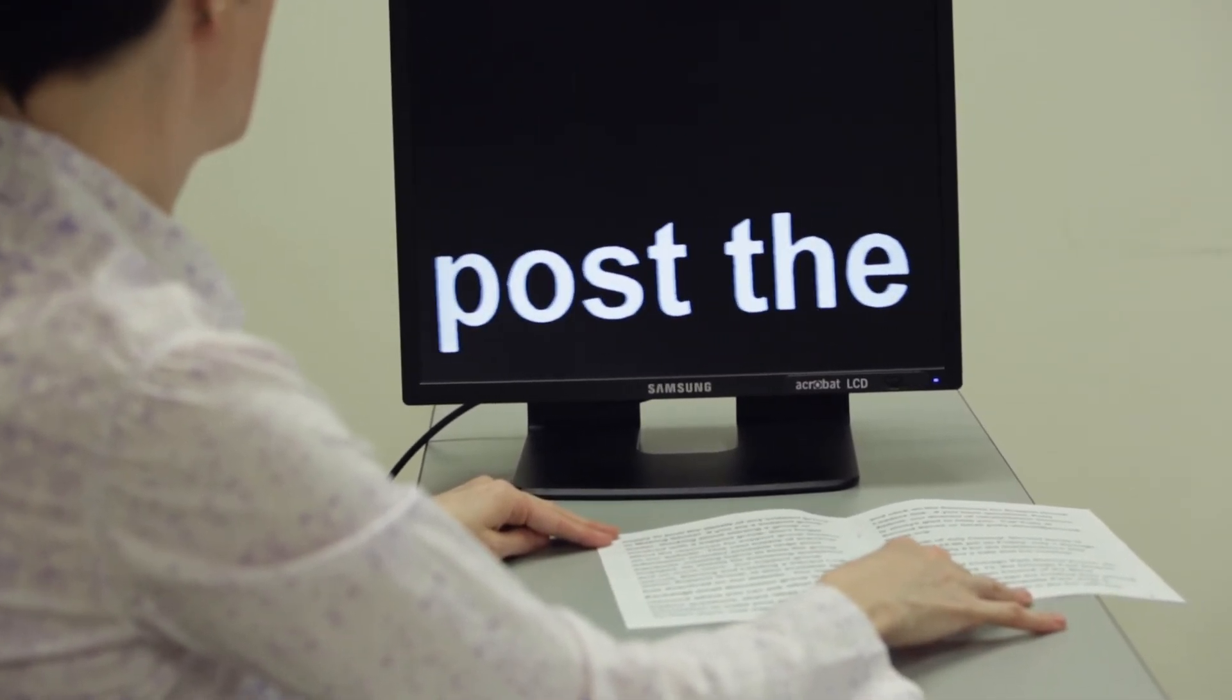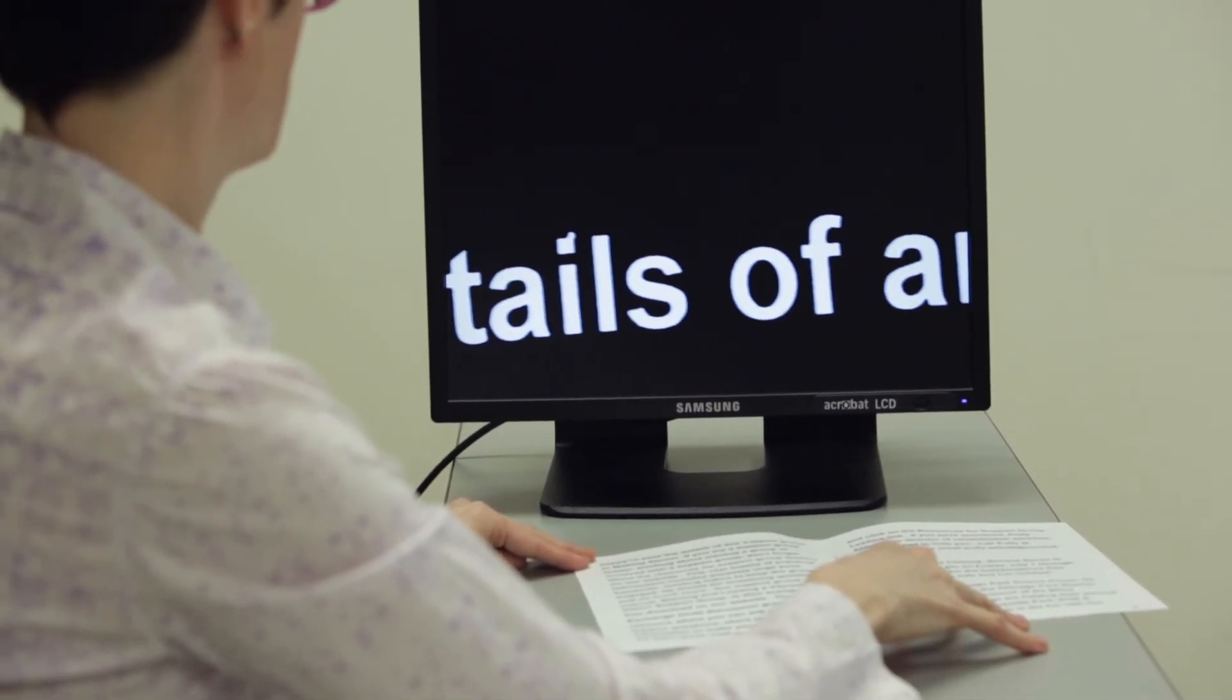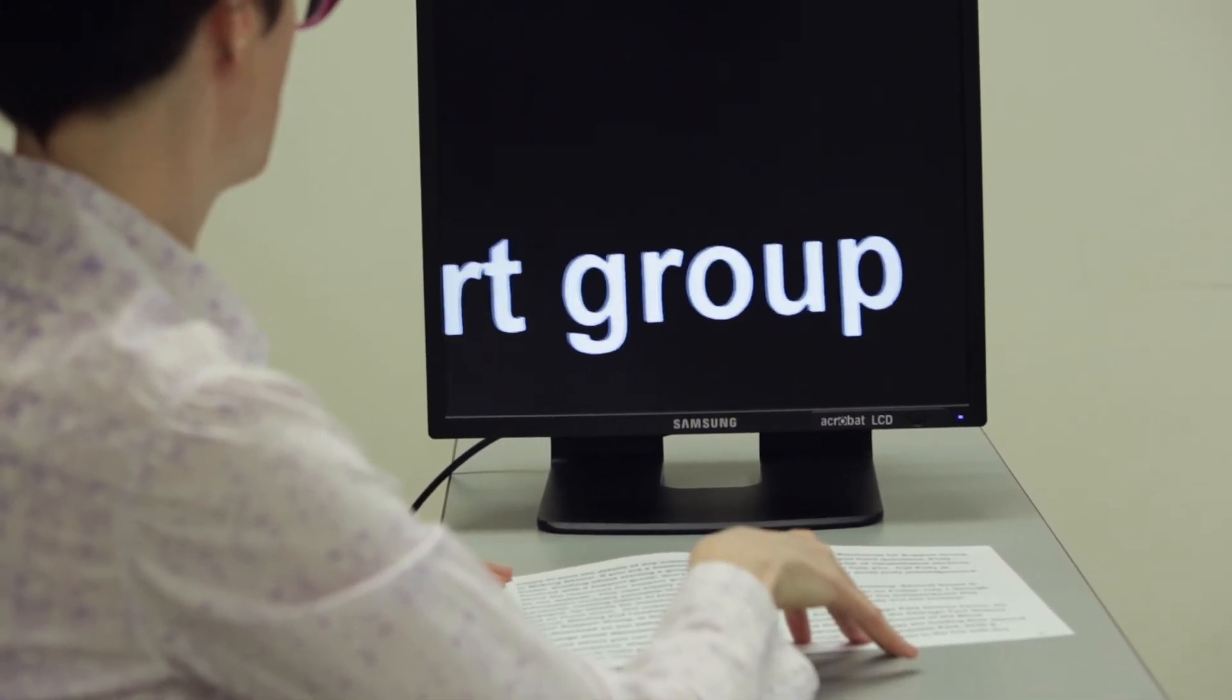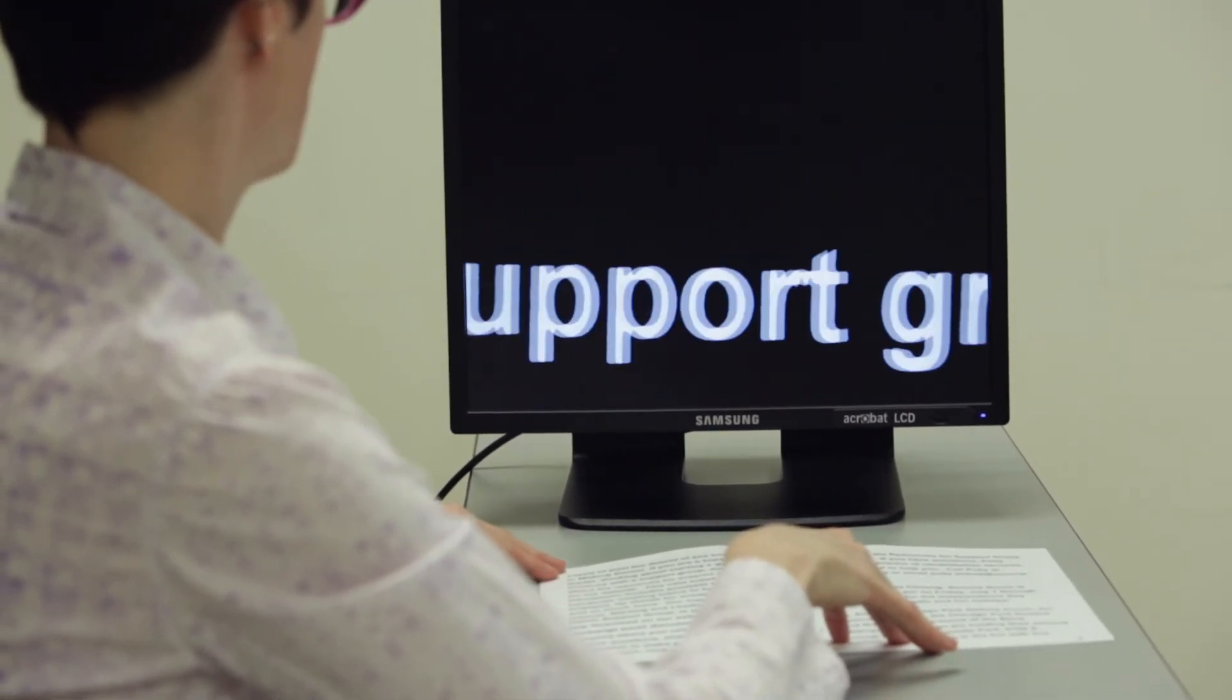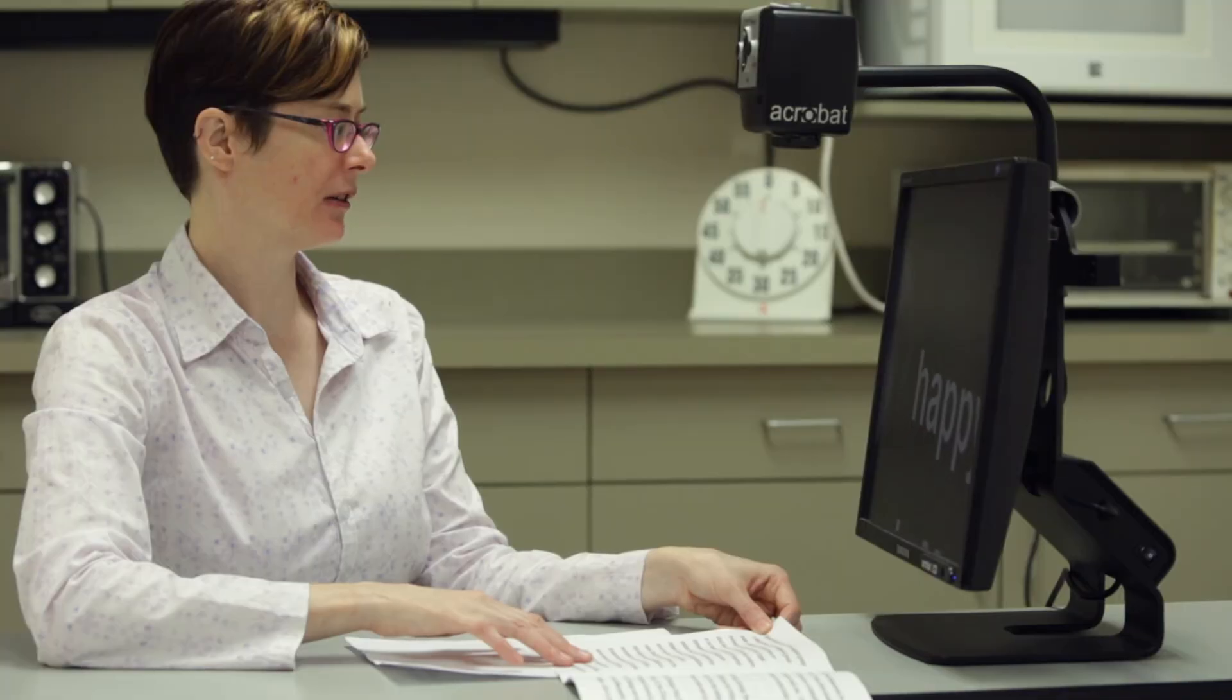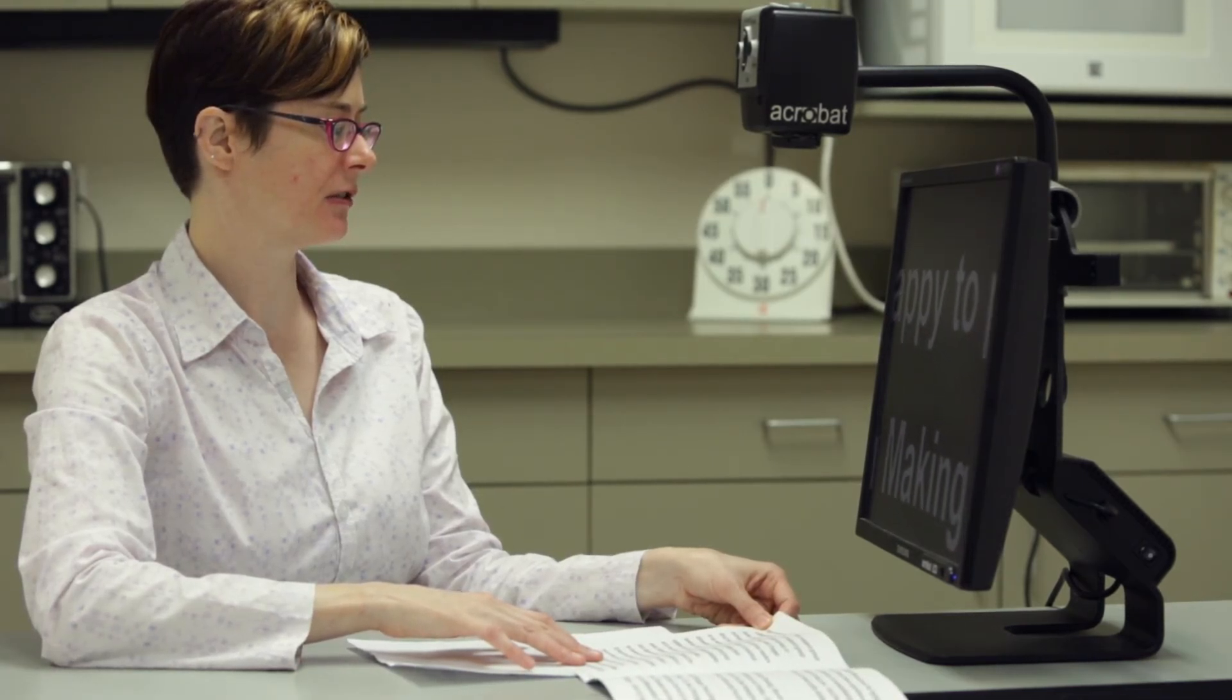And with video magnification, you can use the bottom of the screen to help you track along the line. Again, the technique is the same. When you get to the end of the line, track back over what you just read. There's my thumb, and then carefully make your way down to the next line.